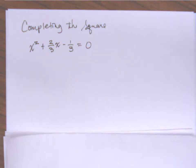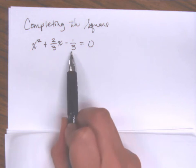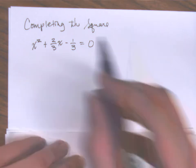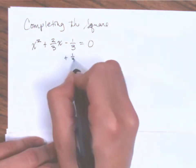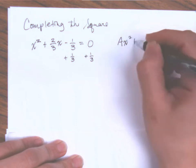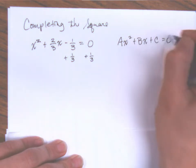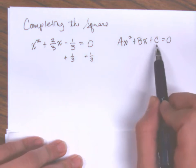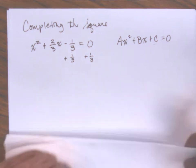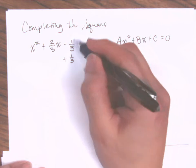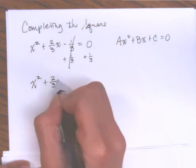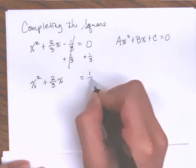The first thing I would do is move this negative one-third over to the other side of the equal sign. With the standard equation ax squared plus bx plus c equals zero, it's easier to take this constant term, subtract it to the other side, and then complete the square. So I'm looking at x squared plus two-thirds x equals positive one-third now.